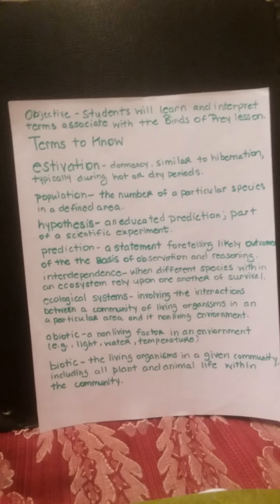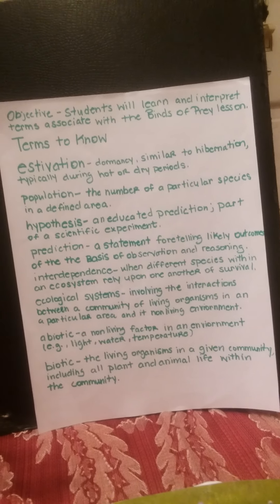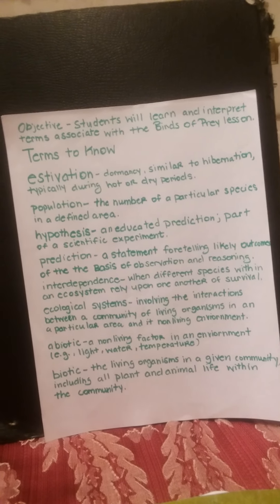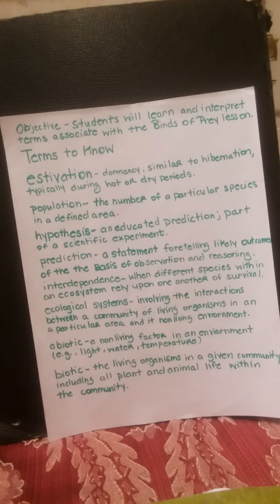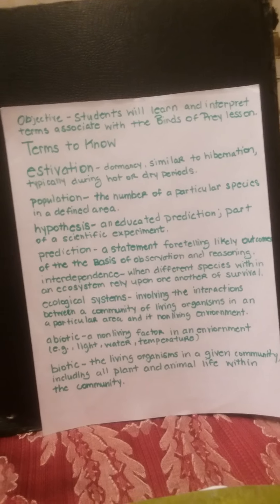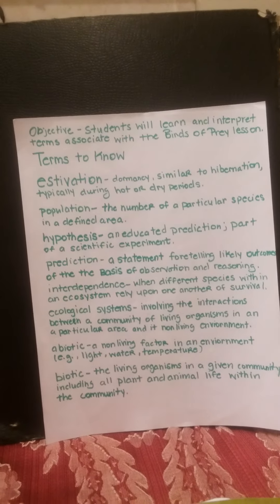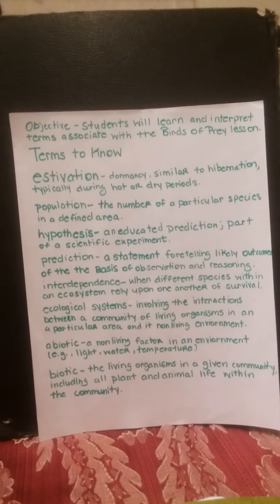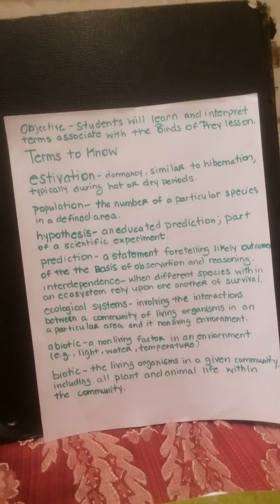Population is the number of a particular species in a defined area. In our lesson, we found that there was a very high population of peregrine falcons and also a large population of Piute ground squirrels. Because of this population of ground squirrels, the peregrine falcons were able to have a stable source of food for a short period of time.